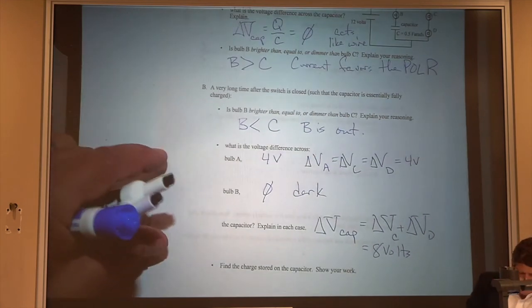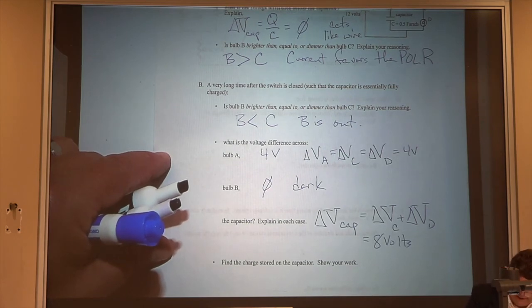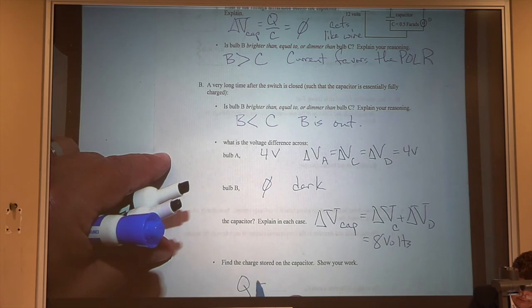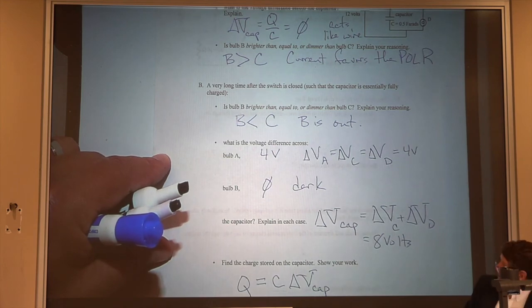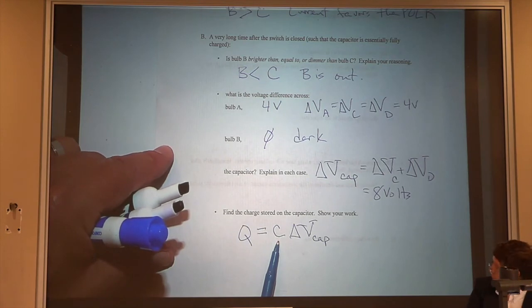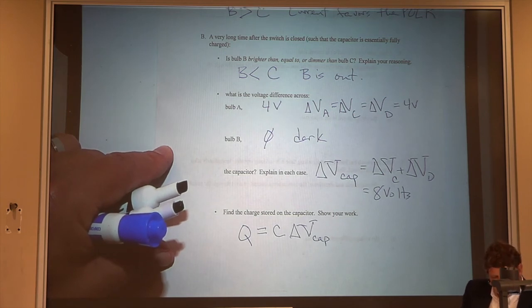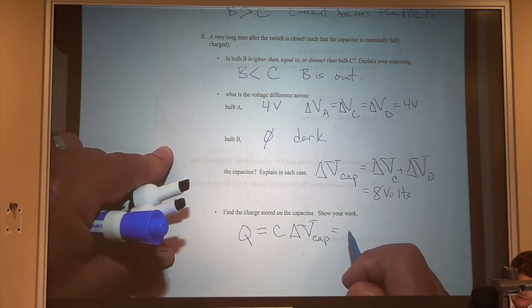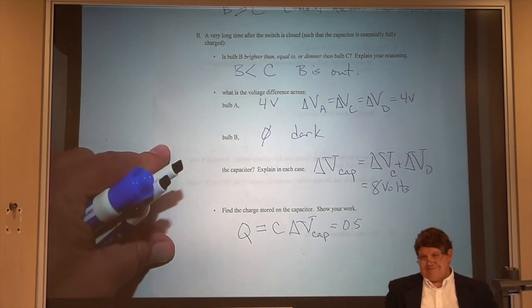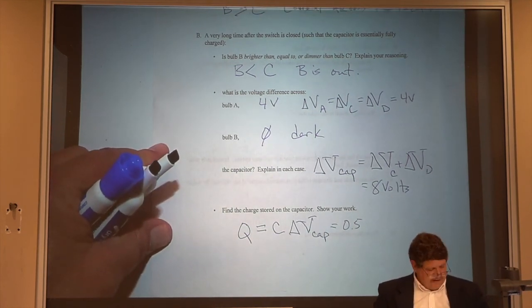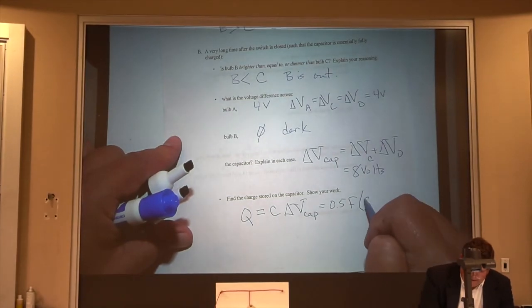Okay. Now the last part of this problem asks us to find the charge stored on the capacitor. Well, we can rewrite that definition of capacitance to look like this. The capacitance is just how much charge you can store for a one volt rise in voltage, and then you multiply that by how many volts you actually increase the voltage. So in this case, the capacitance is given as 0.5 farads. Capacitance is in farads. And then the voltage is going to be eight volts.